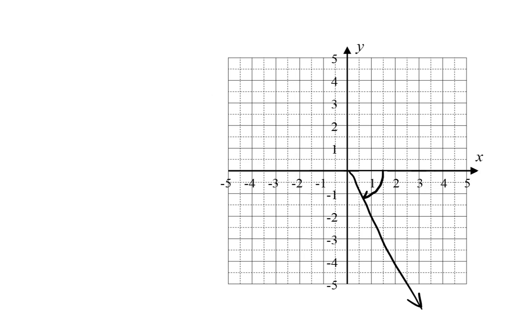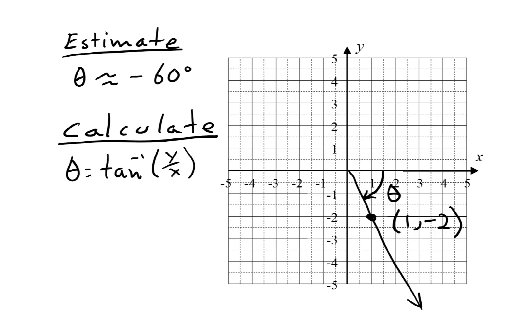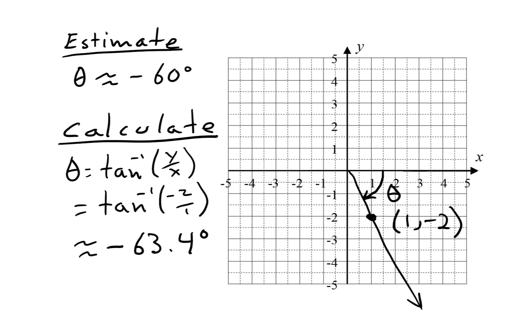In the next example, the vector is below the x-axis, so the y-coordinate is negative. The angle is about 2 thirds of the way from the x-axis to the negative end of the y-axis, so I am estimating it at about negative 60 degrees. That measure is negative because the angle goes clockwise from the x-axis; a positive angle goes counterclockwise. The calculation works just like in the previous example. The angle is the inverse tangent of y over x, which is the inverse tangent of negative 2 over 1. This gives us an angle of negative 63.4 degrees, which agrees with the estimate.